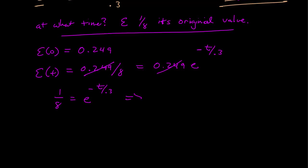Now I take the log of both sides, so the natural log of 1 over 8 equals negative 2.07, and that equals the log of e to the minus T over 0.3, which is minus T over 0.3. These go away, and then multiply by 0.3, and the time is 0.624 seconds.